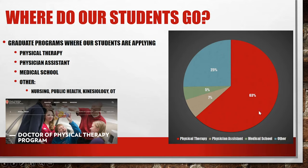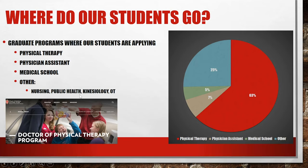The other half — about 51% — plan to apply to graduate school in the future but take a gap year, work for a year, or just take some time off. Of those who apply right after graduating, most of our students are interested in physical therapy, applying to doctorate of physical therapy programs across the country. About 7% apply to physician assistant programs, 5% apply to medical school, and the remaining quarter apply to other programs such as advanced degrees in nursing, public health, kinesiology, or occupational therapy.